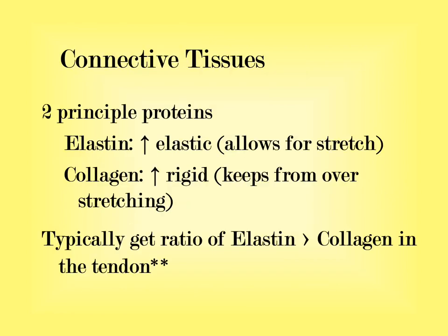The connective tissues contain two principal proteins: elastin and collagen. Elastin increases elasticity and allows stretching; collagen increases rigidity and prevents stretching. In a normal tendon, there is a greater ratio of elastin to collagen compared to ligaments. The more a muscle is used, the more collagen is added to the tendon, and the tendon will start to function more like an aponeurosis — allowing some stretch for kinematic patterning while not losing mechanical advantage.